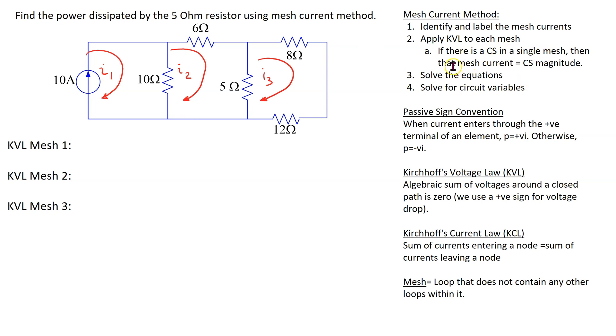If there is a current source in a single mesh, then by Kirchoff current law, the current in that mesh must be equal to the current source. So, the mesh current has to be equal to the current source value.